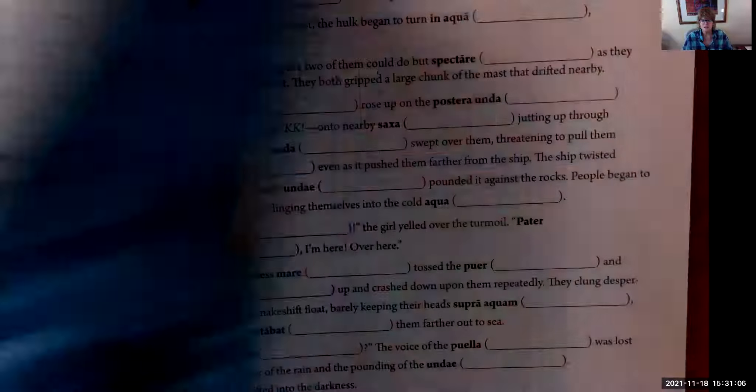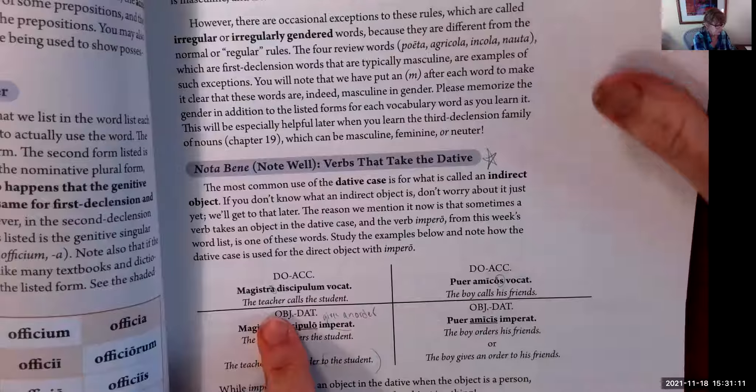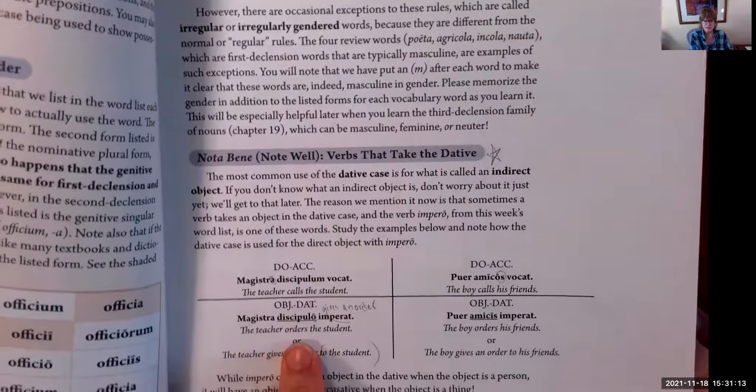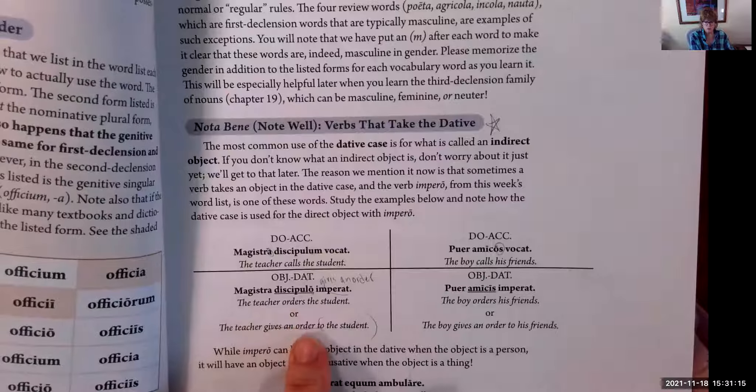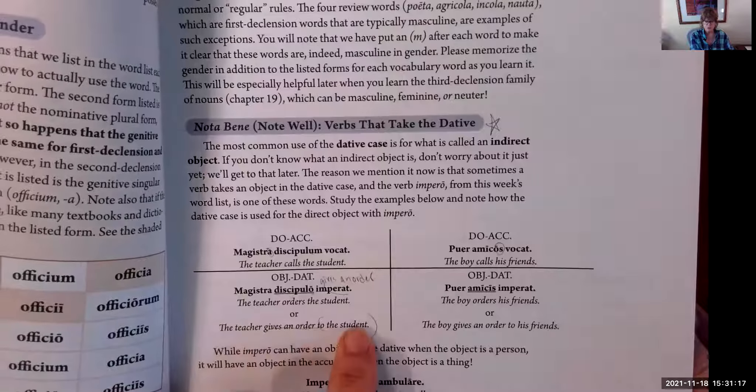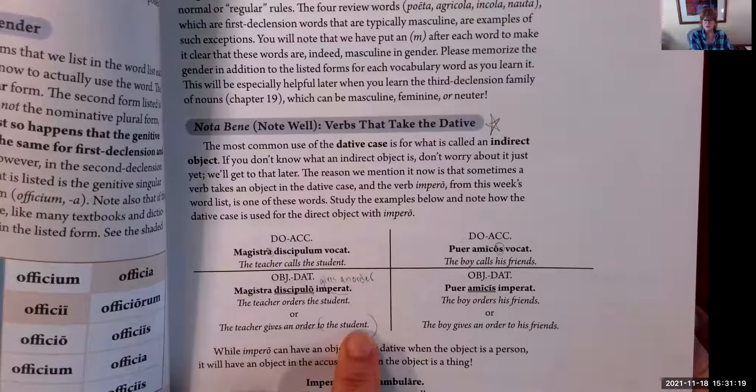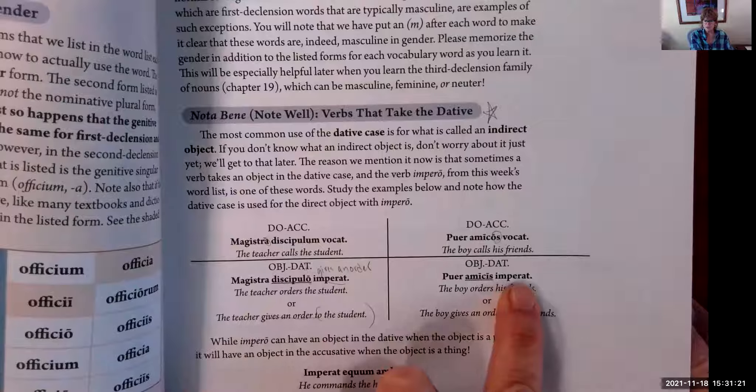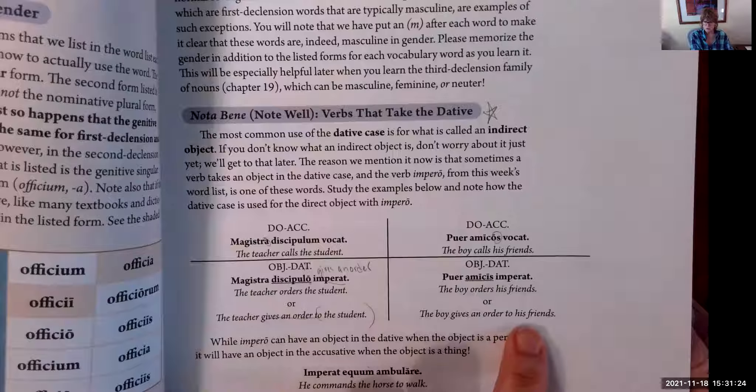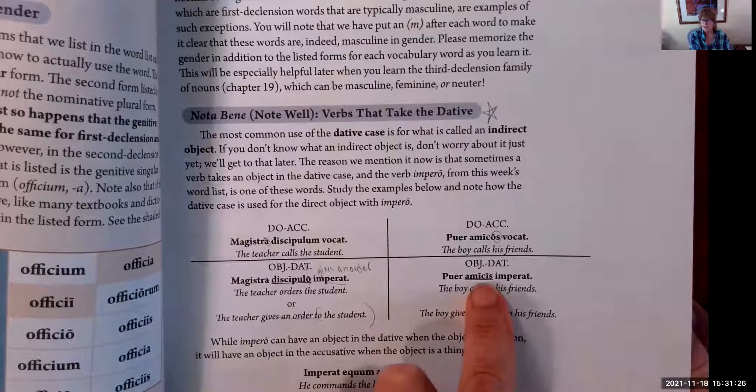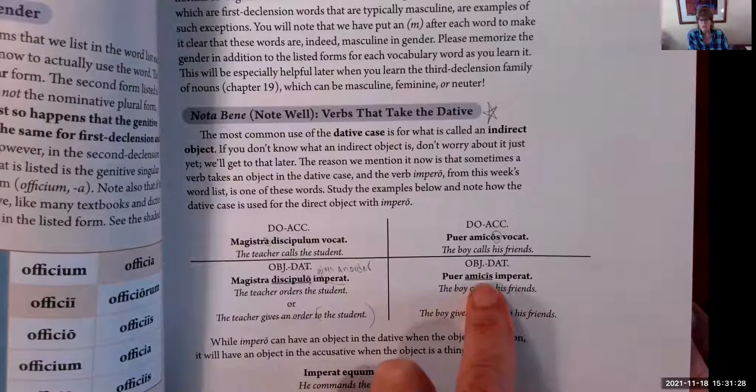Excellent. Now they do have a couple of examples of using that 'gives an order to.' There it is—'gives an order to.' See that? That's the way you translate 'imperat'—gives an order to. And you're going to use that following noun in the dative. That's what that means.